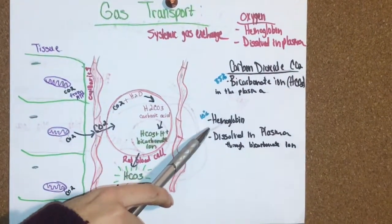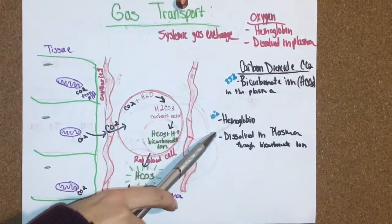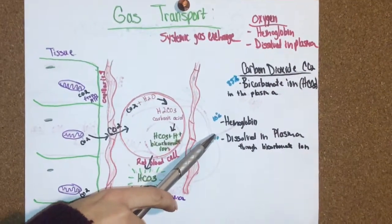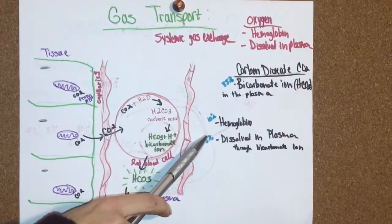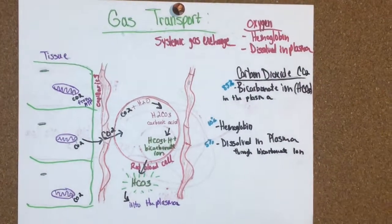It can be transported also by the hemoglobin, and it doesn't interfere with the oxygen because the oxygen binds to the heme and the carbon dioxide binds to the globin.